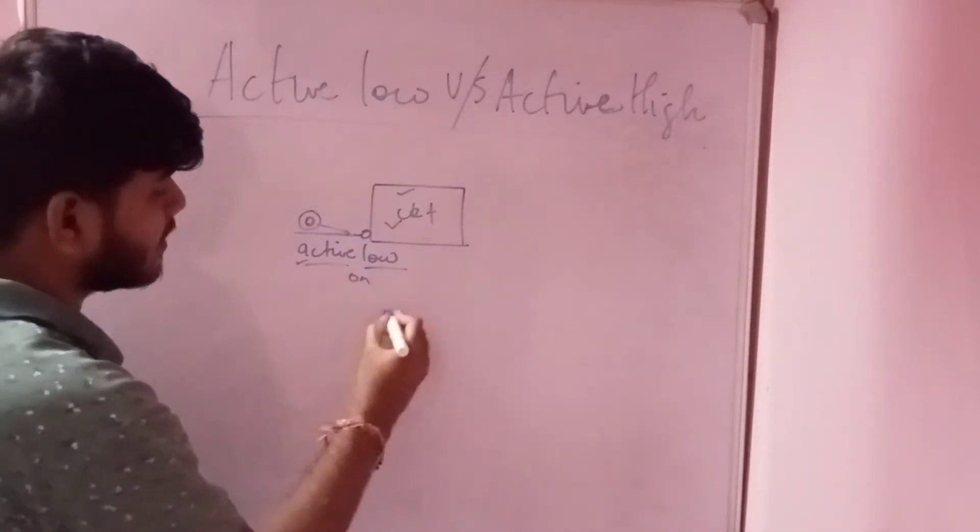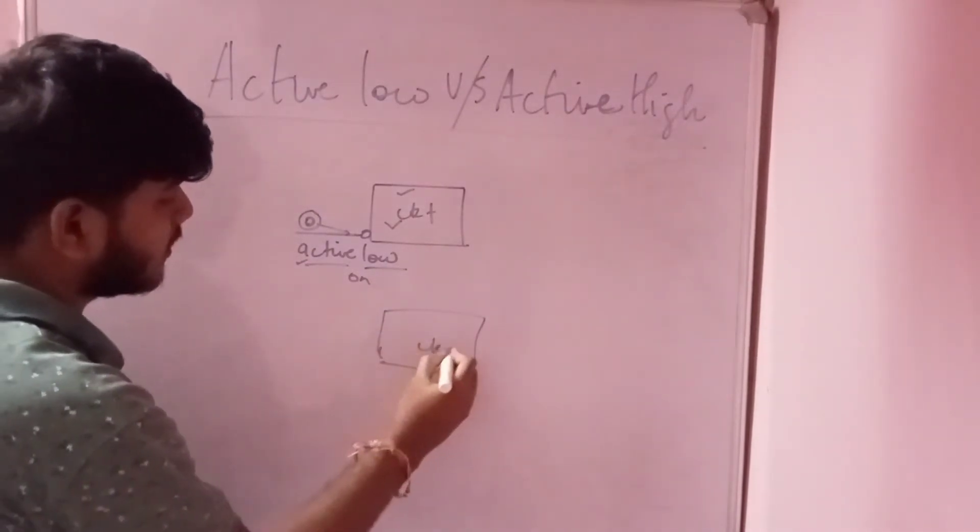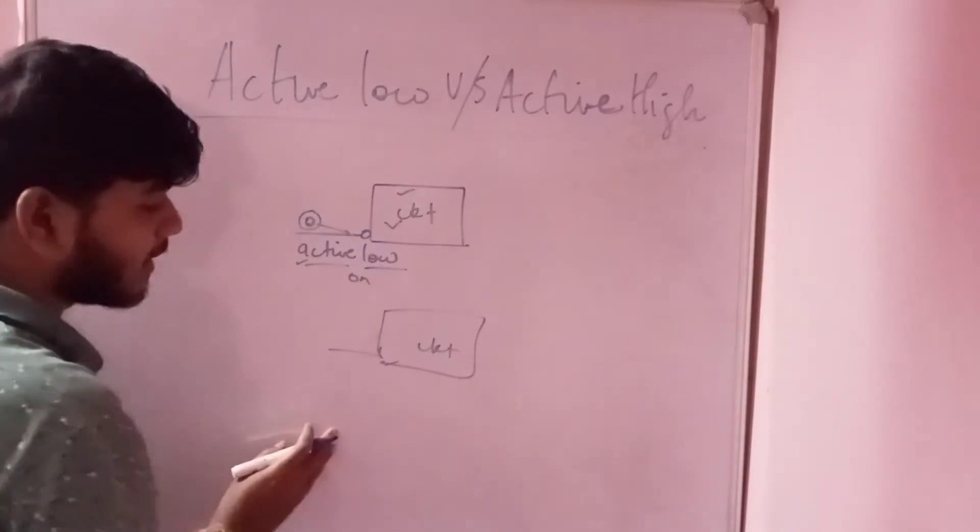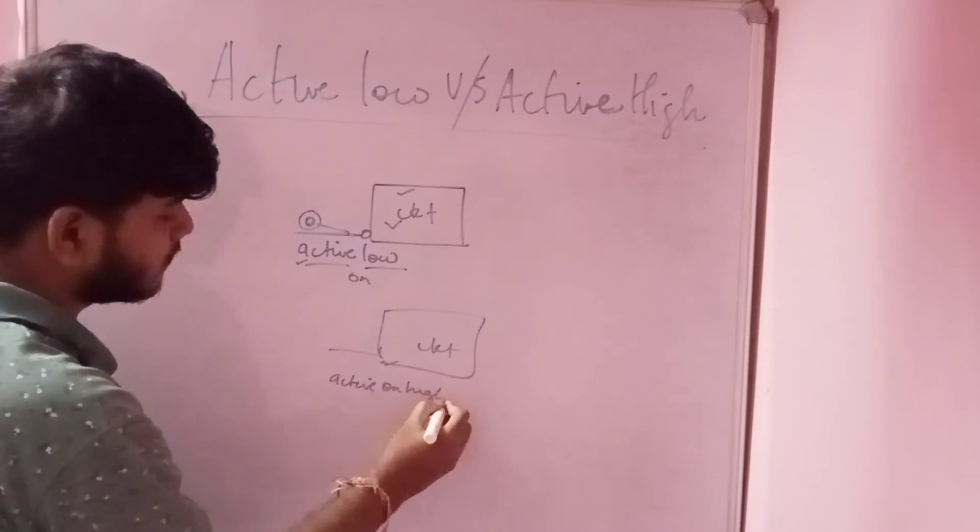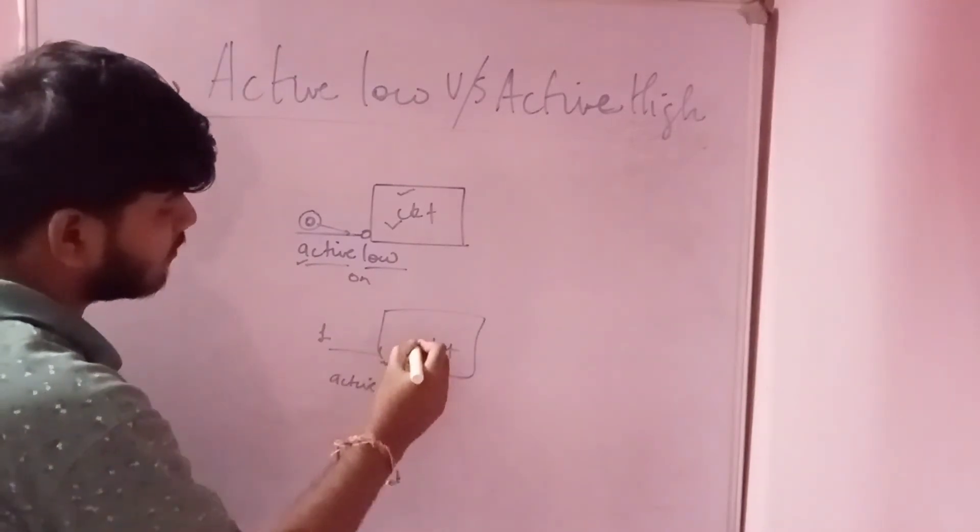Now what is the difference with active high? You have a circuit and this pin is an active high pin. Active high pin is basically active on high. When you give one, this circuit will be activated.